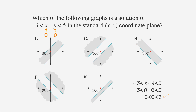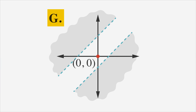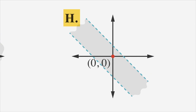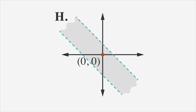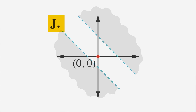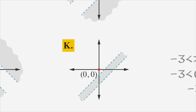Now let's look at the answer choices. Is (0, 0) in the shaded region of choice F? Yes, the origin is in the shaded region, so we'll leave that as a possible answer. How about choice G? No, the origin isn't in the shaded region, so that answer choice can't be right. How about choice H? Yes, (0, 0) is in the shaded region — another potentially correct answer choice, but let's keep looking. How about choice J? Nope, the origin isn't in the shaded region, so this choice is out. And choice K? No, so that choice is out too.